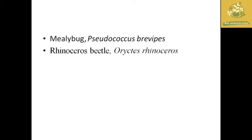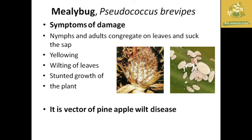The first major pest of pineapple is mealybug. The scientific name of mealybug is Pseudococcus brevipes. The major symptom of damage is that both the nymph and adult congregate on the leaves and suck the sap, causing yellowing of leaves. In severe stages, there is wilting of leaves as well as stunted growth of the plants.